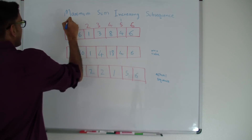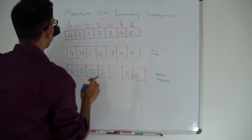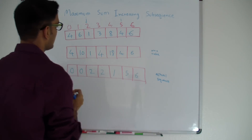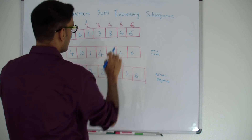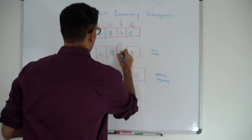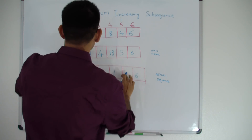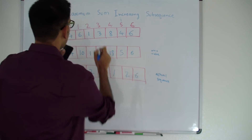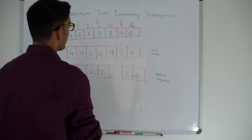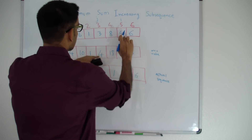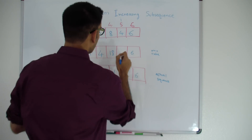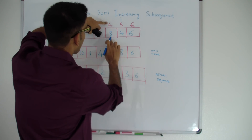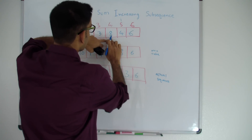For i=5 (value 4): j=0 gives 4, not less than 4; j=1 gives 6, not less than 4; j=2 gives 1, less than 4 — so we get 1 plus 4 = 5, coming from index 2. Then j=3 gives 3, less than 4: the sum is 4 plus 4 = 8, which is greater than 5, so this becomes 8, coming from index 3. j=4 gives 8, which is not less than 4, so this doesn't help.